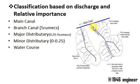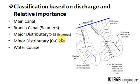There are distributories from the main canal or branch canal, classified as major distributory and minor distributory. A major distributory carries from 0.25 to 5 cumecs of water, whereas a minor distributory carries 0 to 0.25 cumecs of water.